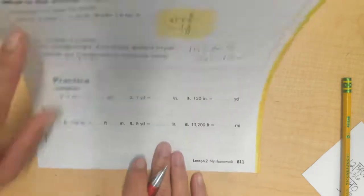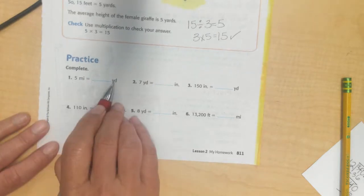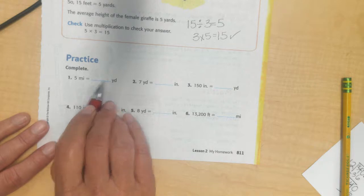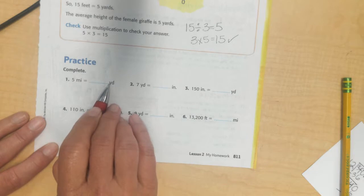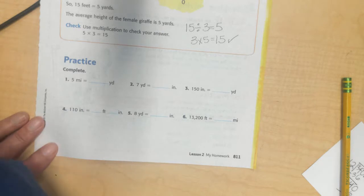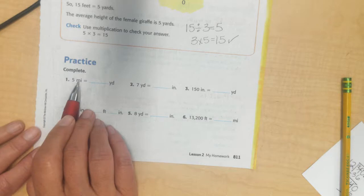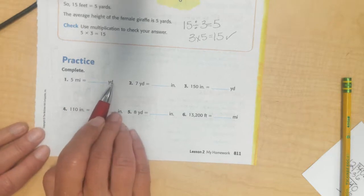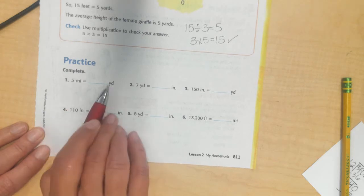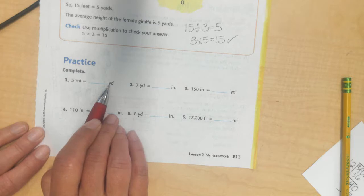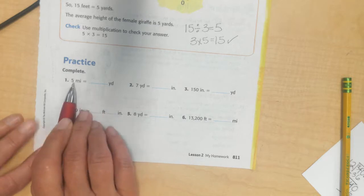Alright, our next problem. I have 5 miles and I want to turn it into yards. My miles are my bigger unit and my yards. So, I'm going to divide this up. I want to divide my 5 miles up into yards. But it's just easier if I turn my 5 miles into feet first, and then I'm going to divide my feet up into yards.